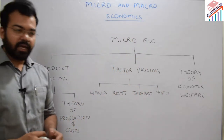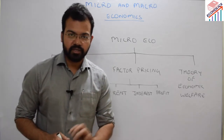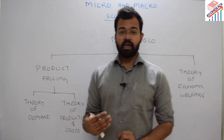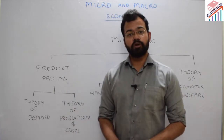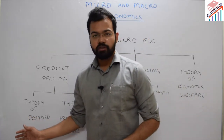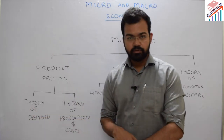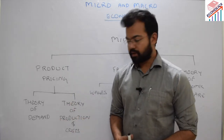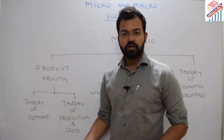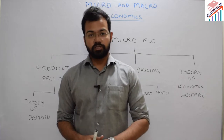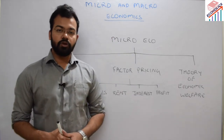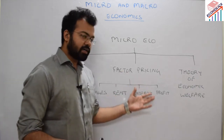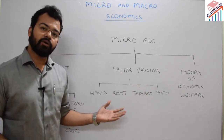Under product pricing, the theory of demand covers concepts like utility, Marshallian utility, and indifference curves. The theory of production and cost covers market structures, mainly monopoly, duopoly, and oligopoly. Factor pricing also plays a very important role in examinations like UPSC optional.